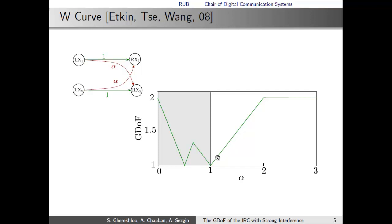For us of interest is this regime here. As you can see, the GDoF is a linearly increasing function of alpha in this regime, which is referred to as the strong interference regime, and stays constant in this regime, which is referred to as the very strong interference regime.